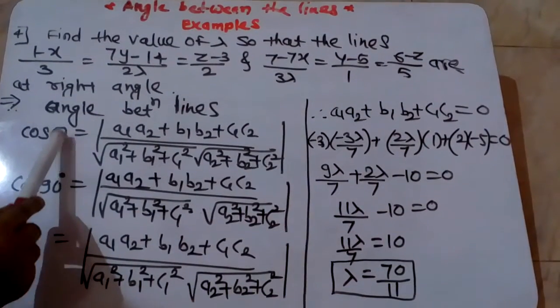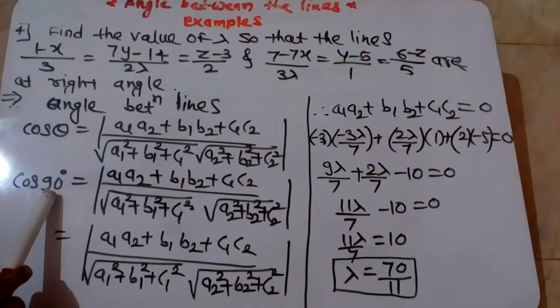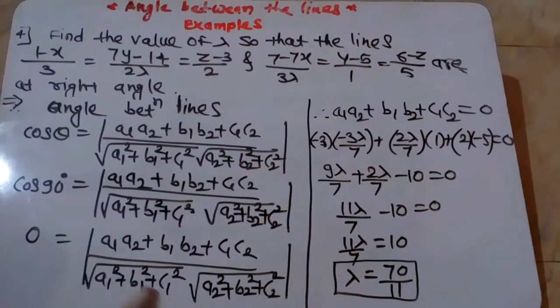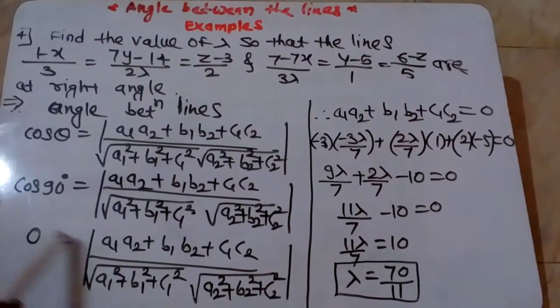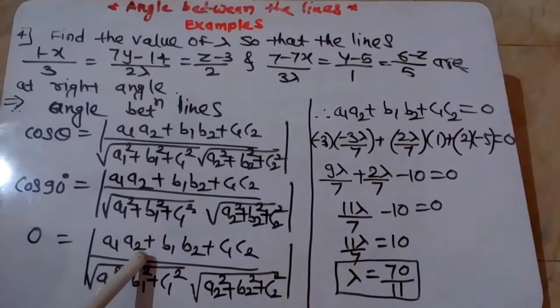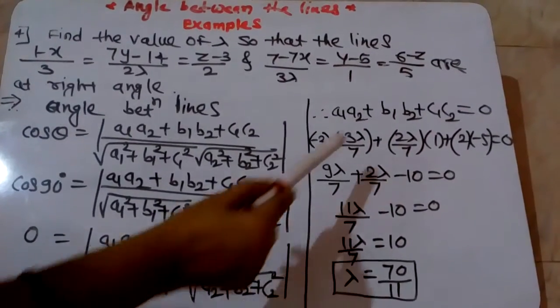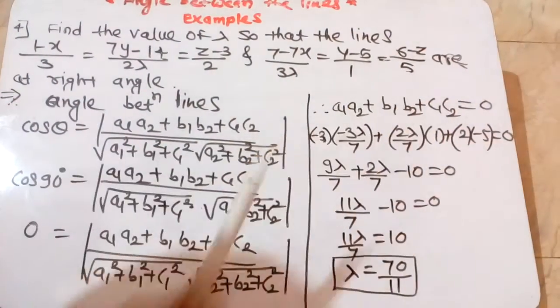Now we put the value of theta, which is 90°. cos 90° = 0. Taking cross multiplication, the denominator becomes 0, and we get a new relation: a₁a₂ + b₁b₂ + c₁c₂ = 0. This means when two lines are at right angle, we write a₁a₂ + b₁b₂ + c₁c₂ = 0.